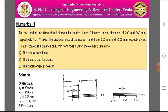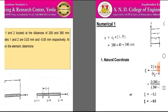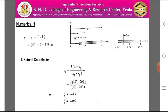According to the given data: X1 = 200 mm, X2 = 360 mm, U1 = 0.03 mm, U2 = -0.05 mm, and the distance from node 1 to P is 40 mm. From the figure, the distance X (distance of point P from the y-axis) is obtained as X = X1 + distance from node 1 to P = 200 + 40 = 240 mm.